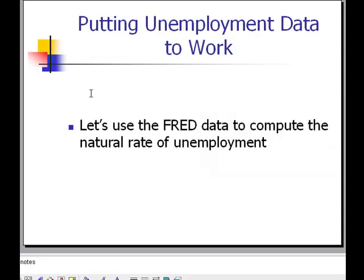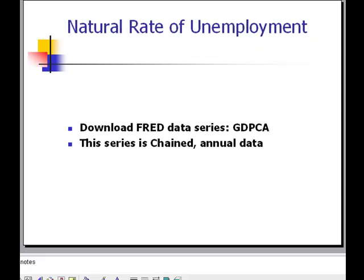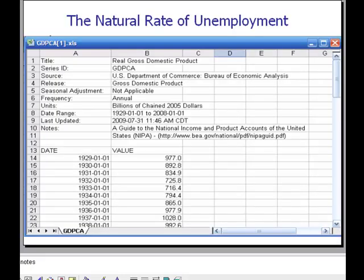Let's use the FRED database to actually compute the natural rate of unemployment. Set your browser to stlouisfed.org and download the FRED data series GDP CA, which is the annual change-weighted series. You'll see a screen beginning in 1929 with $977 billion worth of goods and services produced during that time.